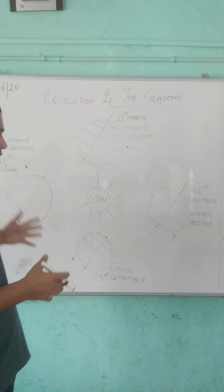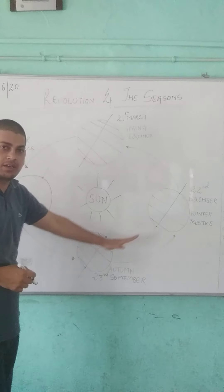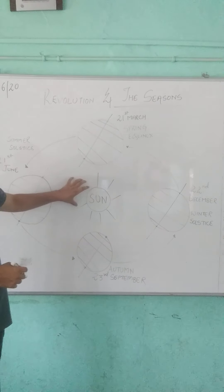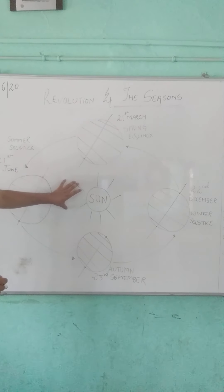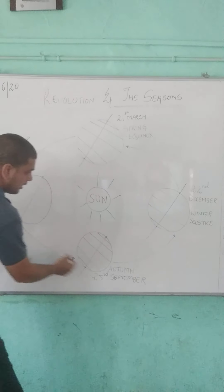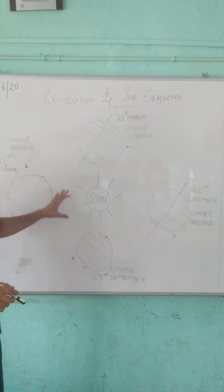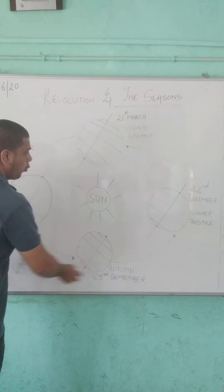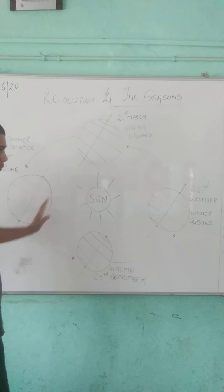Let us understand with the help of this diagram. The second motion, revolution, is the motion of the earth around the sun in an elliptical orbit, which takes about 365 and 1/4 days to complete one round.